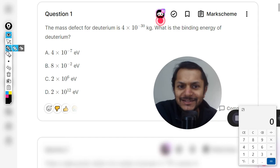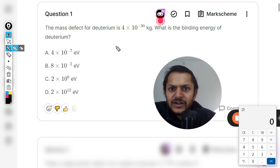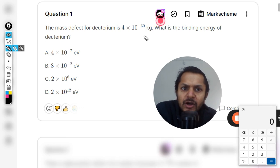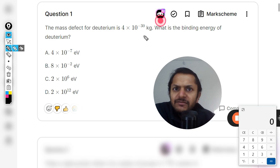Let us see what is there in this question. The mass defect of deuterium is 4 × 10^-30 kg. What is the binding energy of deuterium? So mass defect is directly given to us.